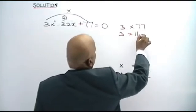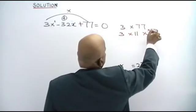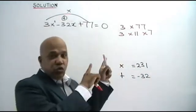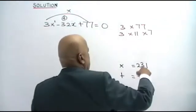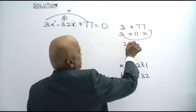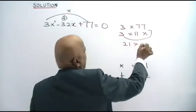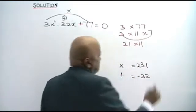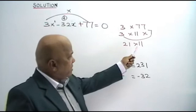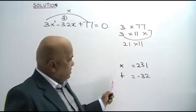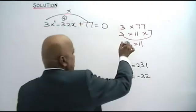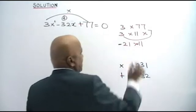3 times 11 times 7. If you look very carefully, this is equal to 231. Now, what is 3 times 7? That's 21. 21 times 11 is 231. So the two numbers are actually 21 and 11. But like I said, they must add up to give negative — so both numbers are negative: negative 21 and negative 11.